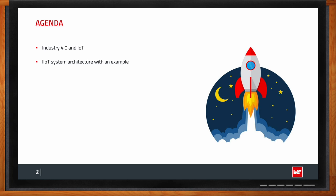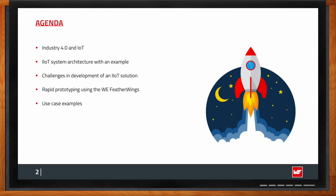We'll make it relatable with an example, then discuss the challenges involved in developing an industrial IoT solution, how rapid prototyping helps overcome those challenges, and present a few tools from Würth Elektronik that help in rapid prototyping for industrial IoT solutions, along with some use case examples realized using these tools.